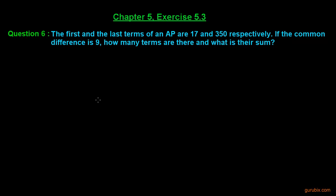Let us solve question number 6 of exercise 5.3 of chapter 5. The question says: the first and the last term of an AP are 17 and 350 respectively. If the common difference is 9, how many terms are there and what is their sum? Let us see how to solve this question.